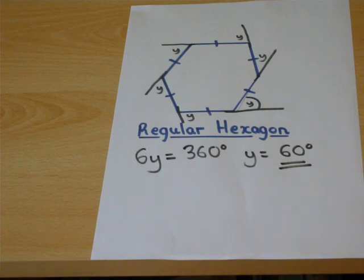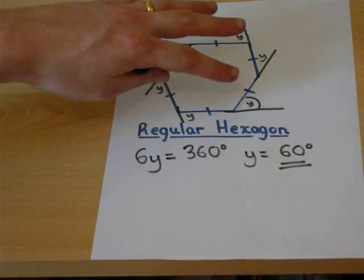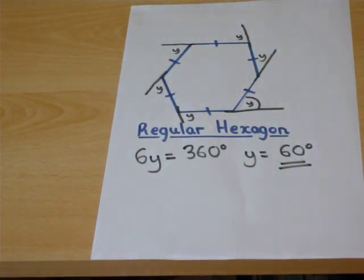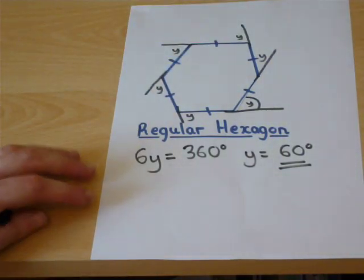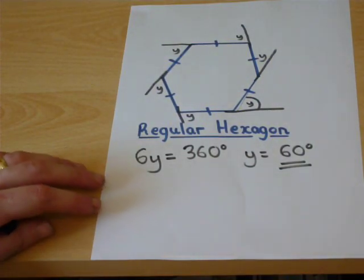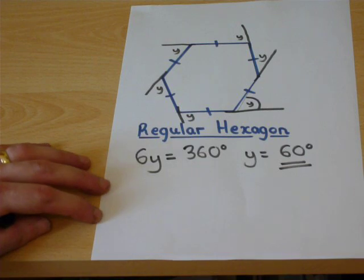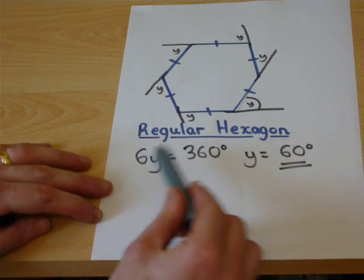So the exterior angles of any shape, actually, always add up to 360 degrees. Because there are six of them, and they contribute equally, because it is regular, we can therefore find just how large that exterior angle is, quite simply.